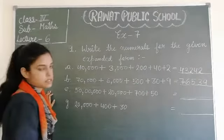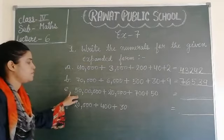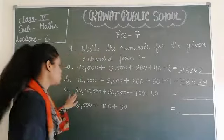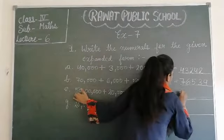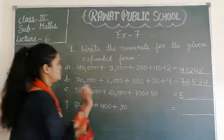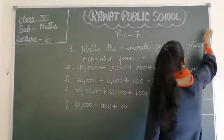Next, come to the question number E. Fifty lakh, twenty thousand seven hundred fifty. So, we write five. Fifty lakh se before kya aata hai? Place, according to place value.